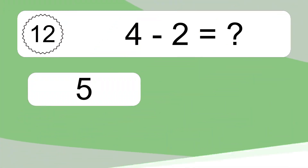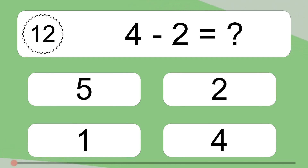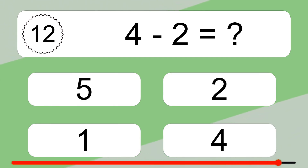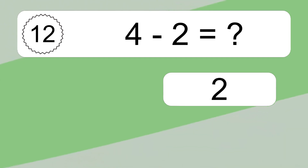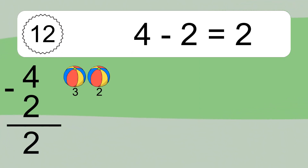4 minus 2 equals what? 4 minus 2 equals 2. Let's count it: 3, 2.